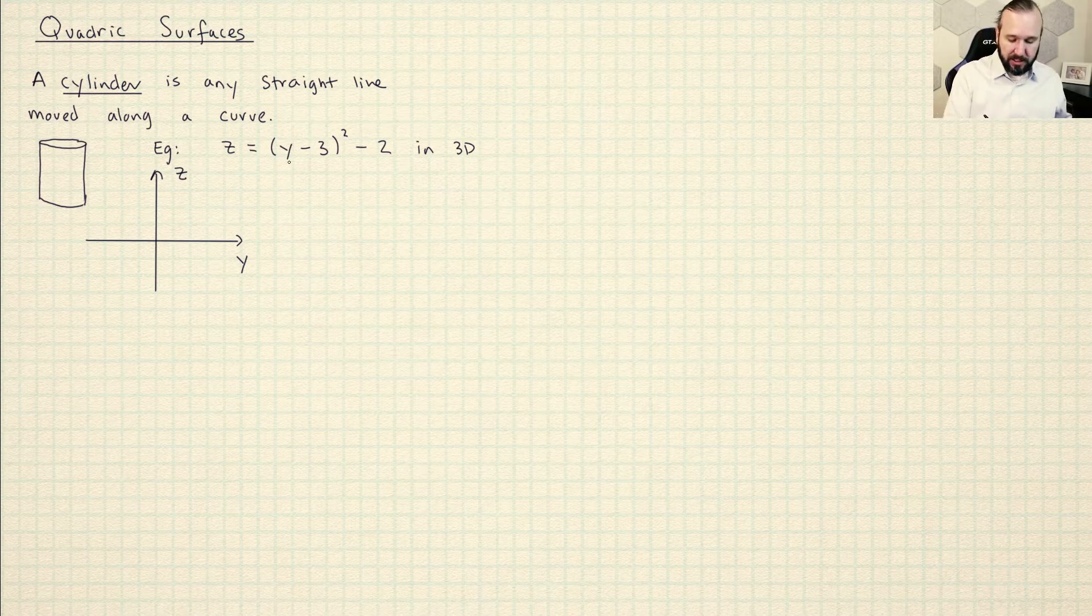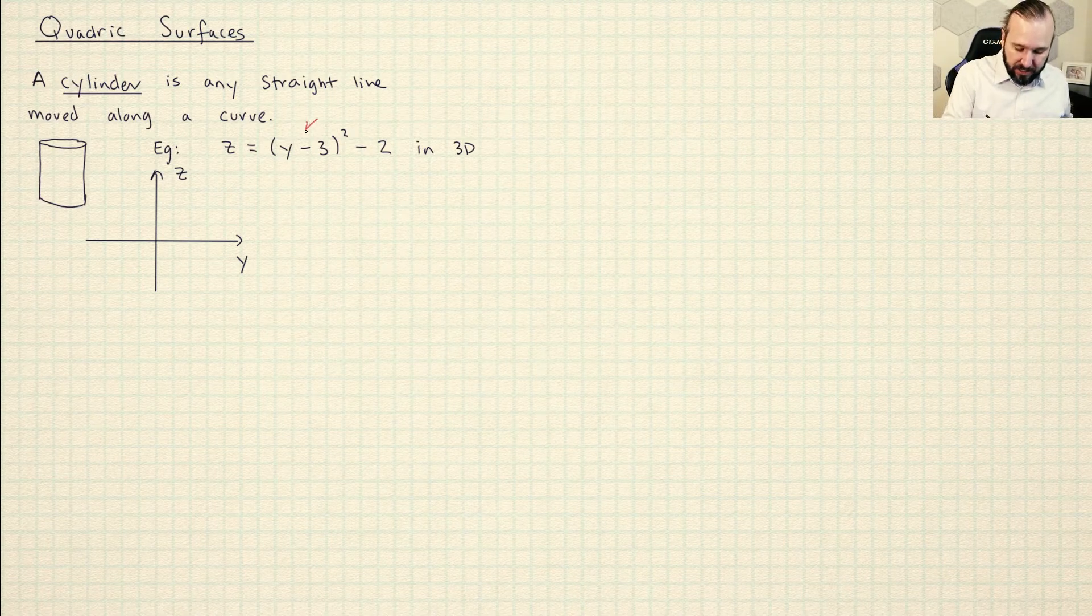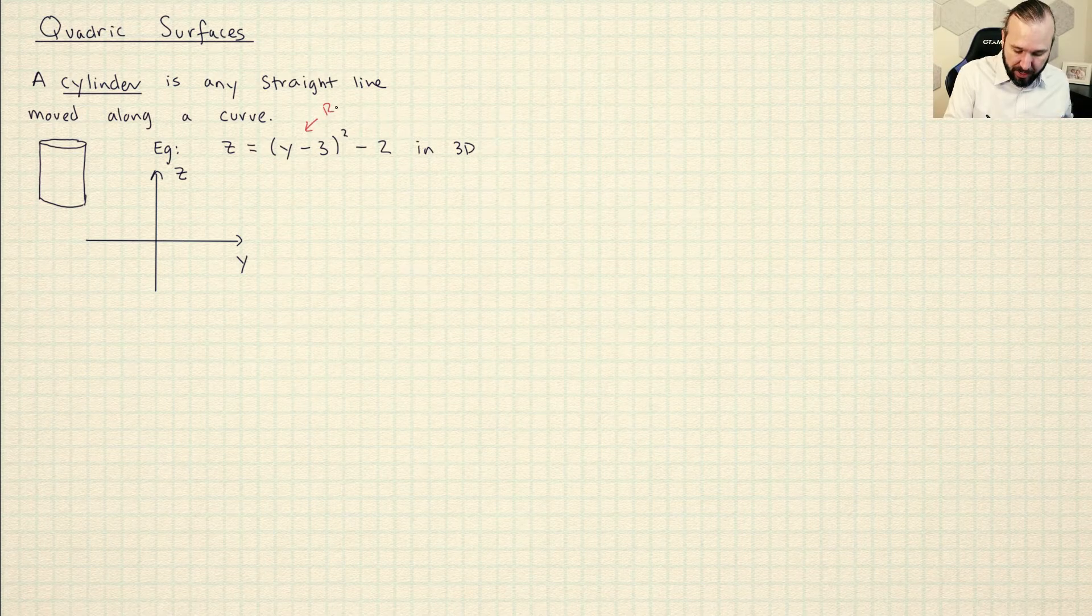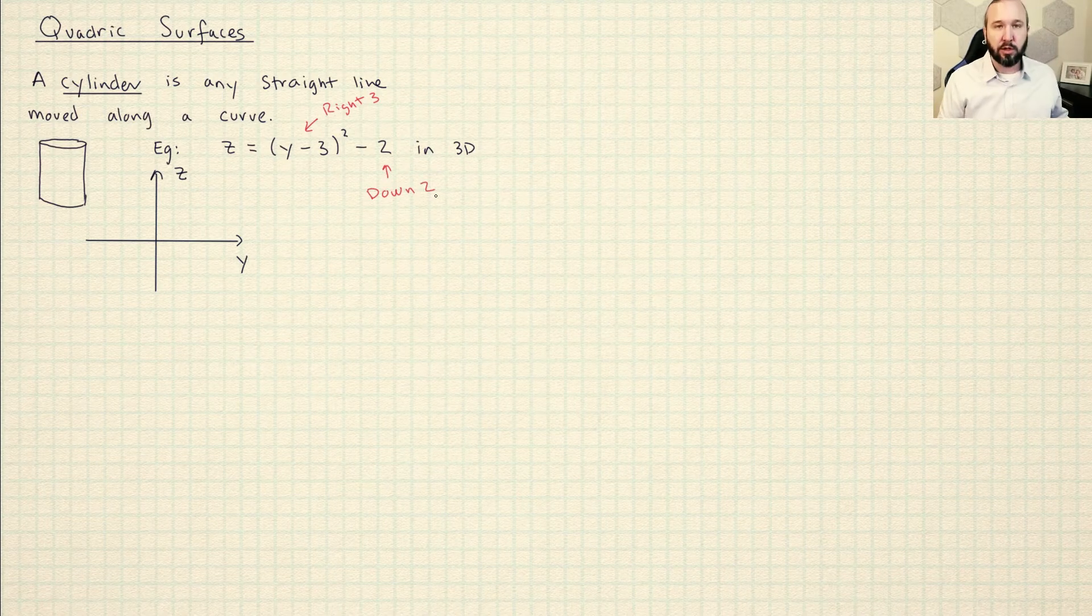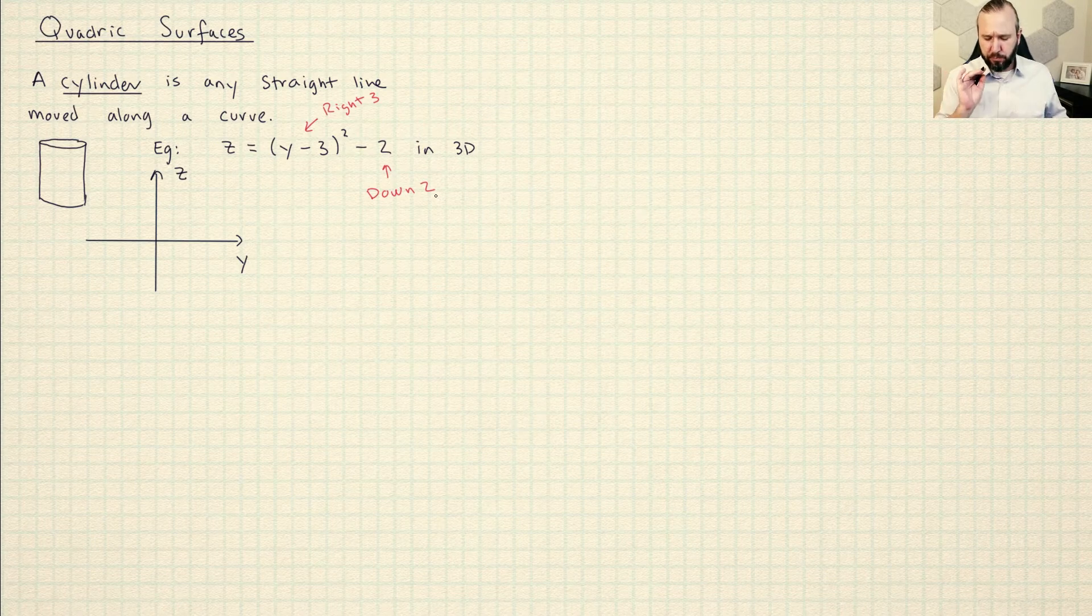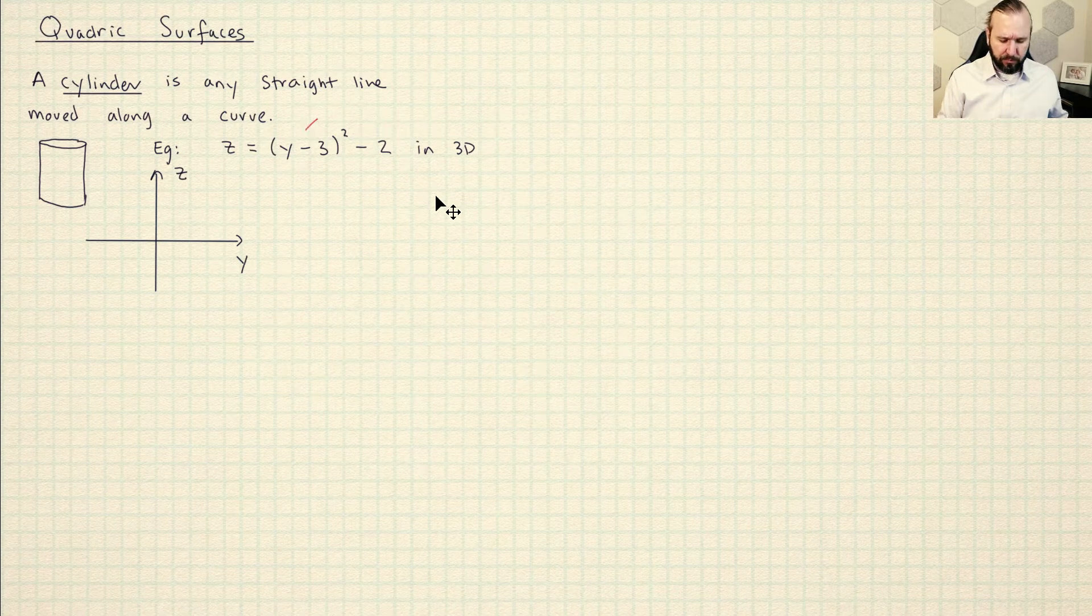And what I see when I look at this is I see a parabola because it's like something squared. And then it has been shifted on the Y axis right three and it has been shifted on the Z axis down two. So I just want to remind you about how those basic algebra manipulations affect the graph.